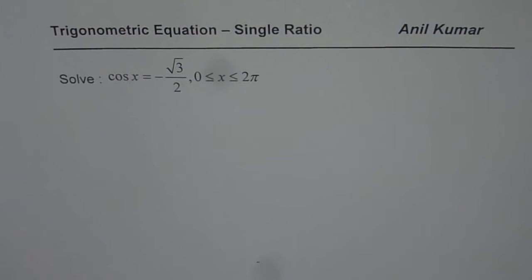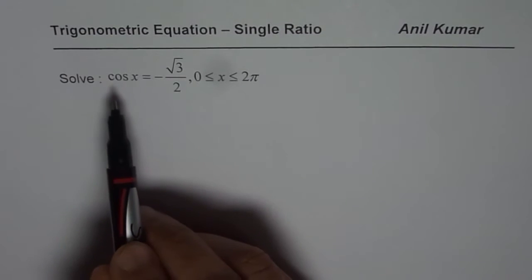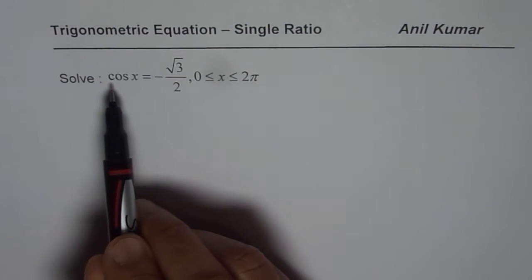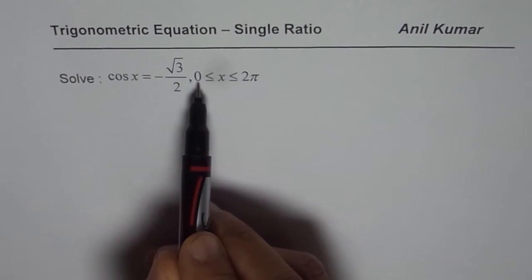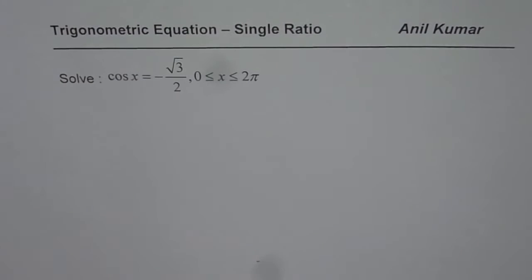I'm Anil Kumar and in this video we are going to learn all the important steps which you need to know to solve any trigonometric equation. We'll begin with a very simple example which has just a single ratio. The example is cos(x) = -√3/2, where x is between 0 and 2π. My idea is if you can follow some steps and do a simple question like this, then you should be in a position to solve any trigonometric equation, including linear, quadratic, and their combination.